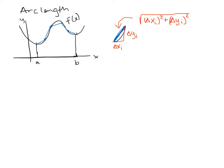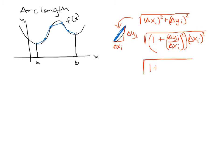From that formula I can factor out delta x sub i. If I do that, I get the square root of 1 plus delta y sub i divided by delta x sub i, all of that squared, times delta x sub i squared. Then taking the delta x sub i outside of the square root, I get the square root of 1 plus (delta y sub i over delta x sub i) squared, times delta x sub i.